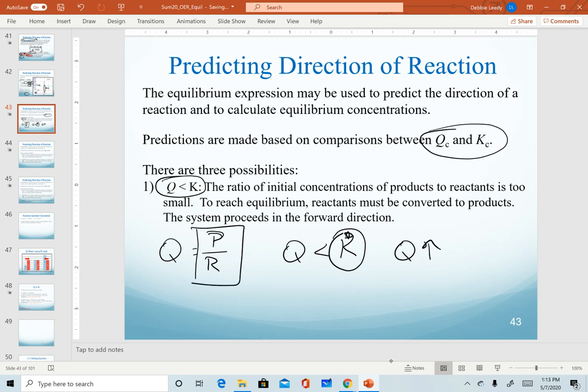Again, in order for Q to increase, that means that our products have to increase. And at the same time that our products are increasing, our reactants are going to decrease.